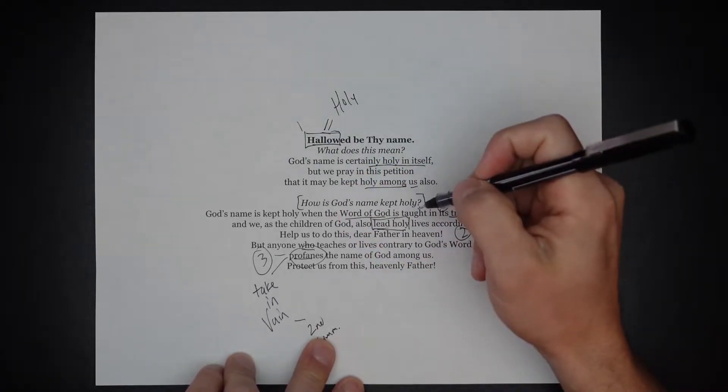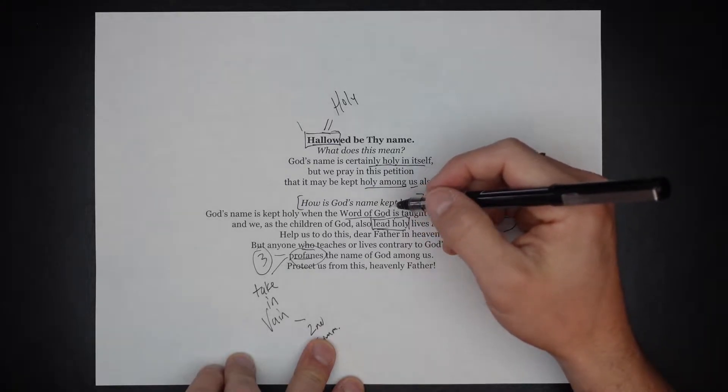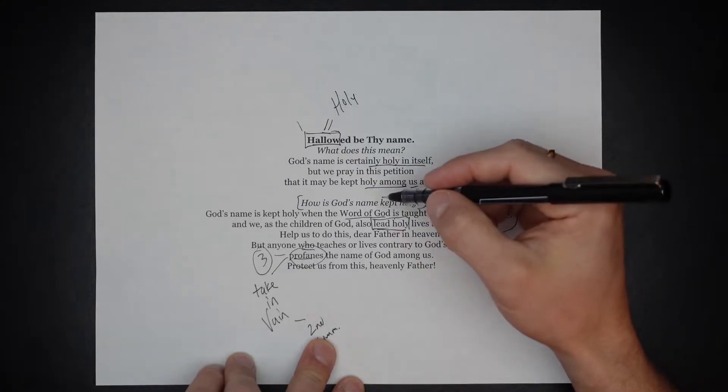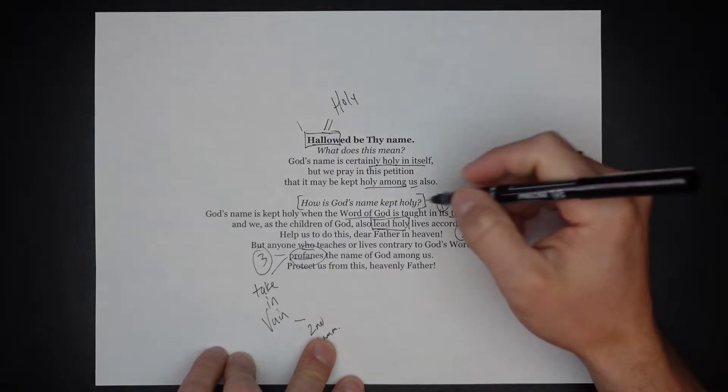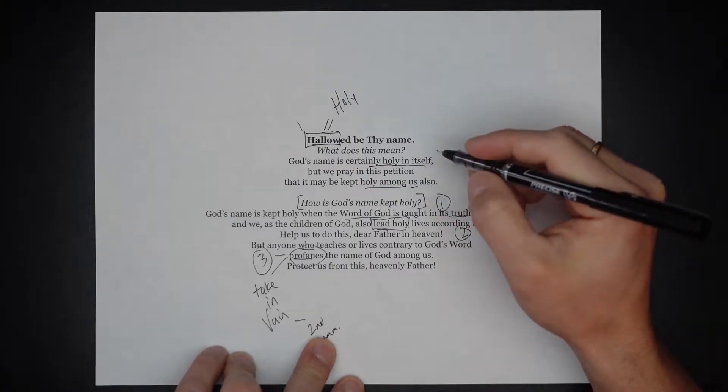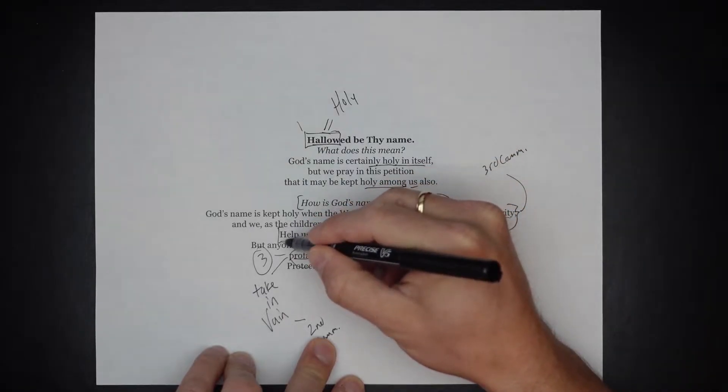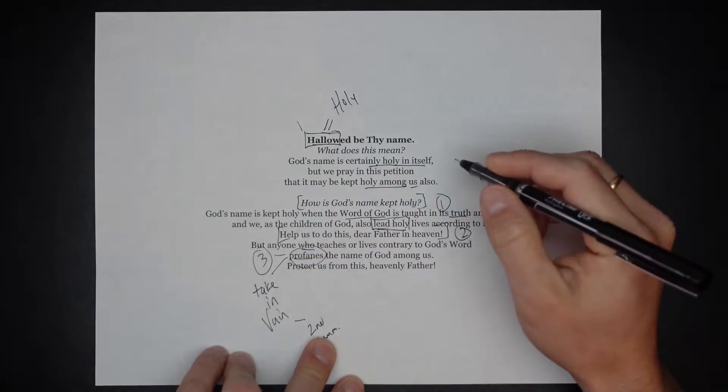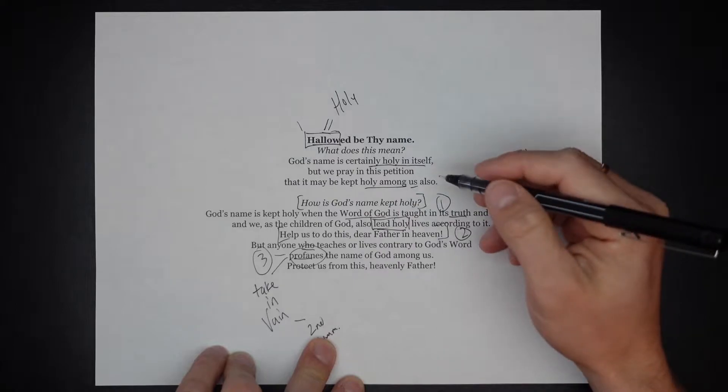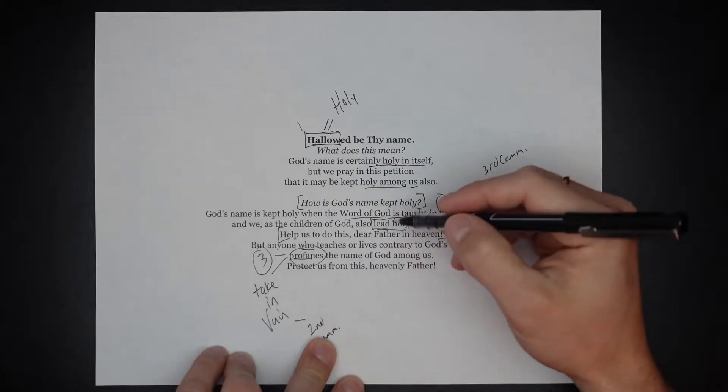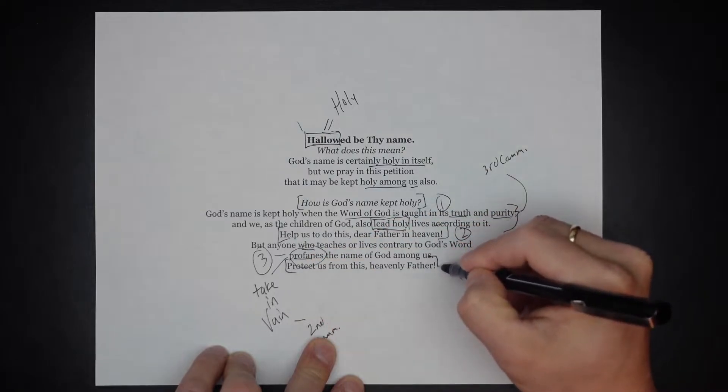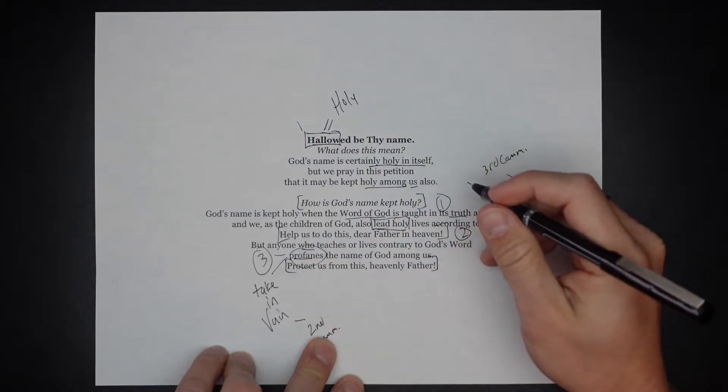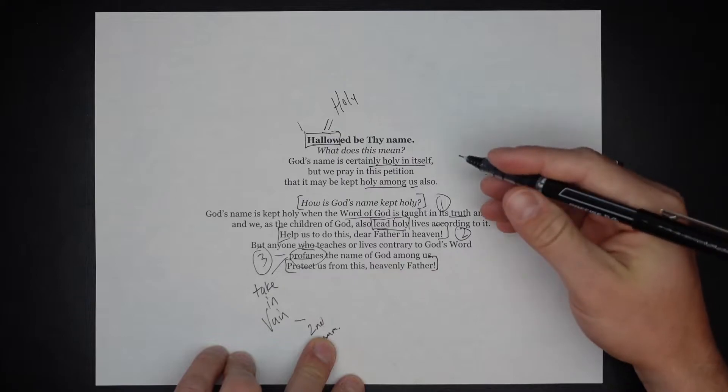It's neat also that Luther includes two prayers in this petition. When we confess that the word of God be taught in its truth and purity, and that we would lead holy lives according to it, we pray help us to do this, dear Father in heaven. And anyone living contrary or teaching contrary to God's word and profaning his name, we say protect us from this, dear Father in heaven. So this is our prayer.